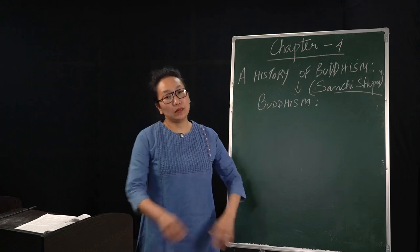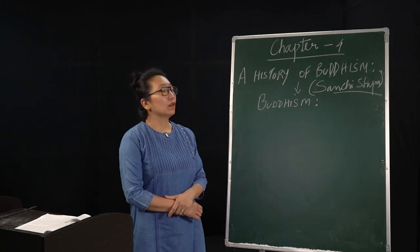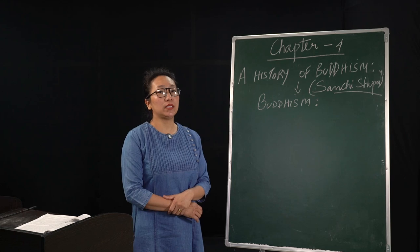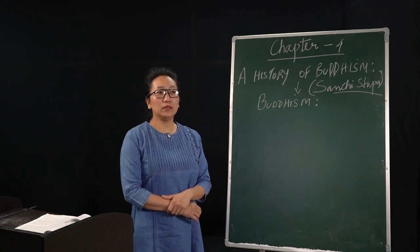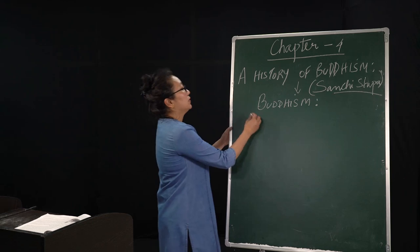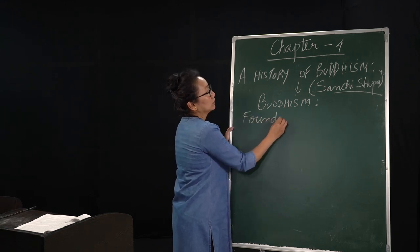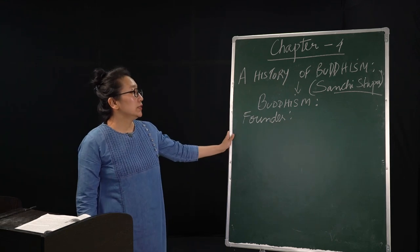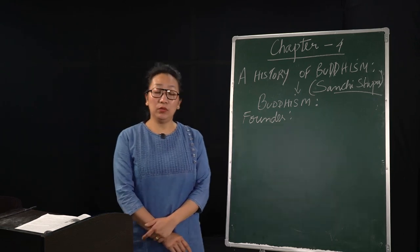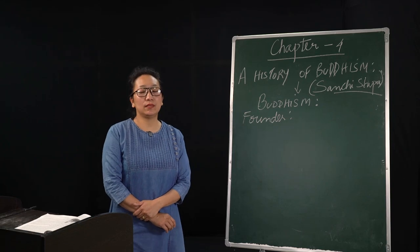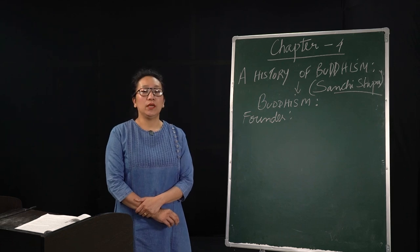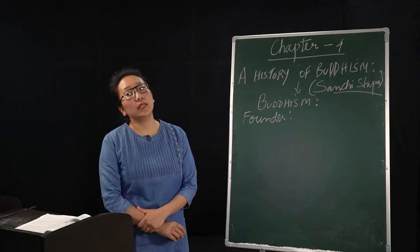We will come back to the major religion today, that is Buddhism. Most of us know this religion, and this is a very mild religion that has been founded by Gautama Buddha. 6th century BC produced this religion and the original name for Gautama Buddha, his real name was Prince Siddhartha. He was born in 563 BC and he was a prince. His father was a ruler in a place called Kapilavastu in Bihar.